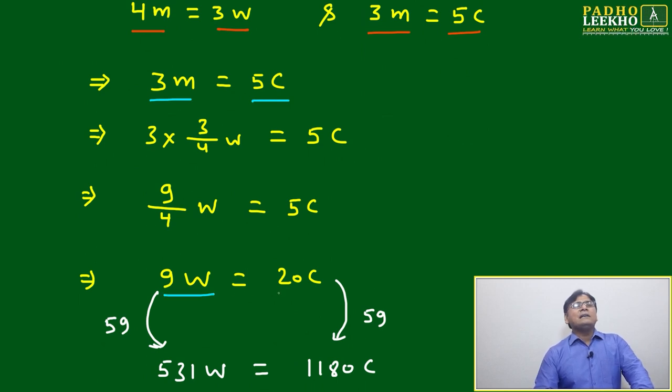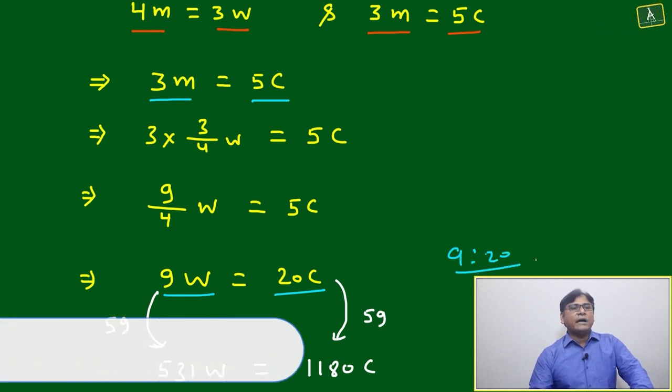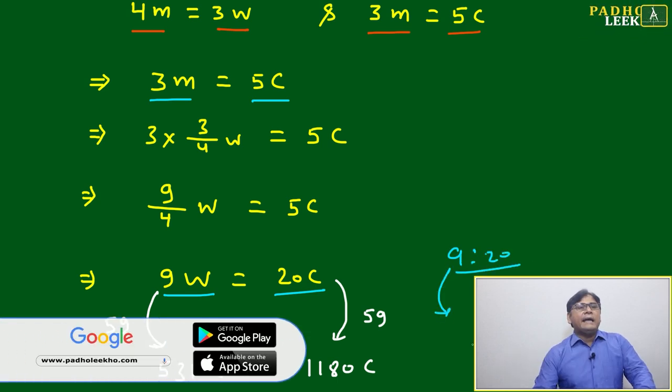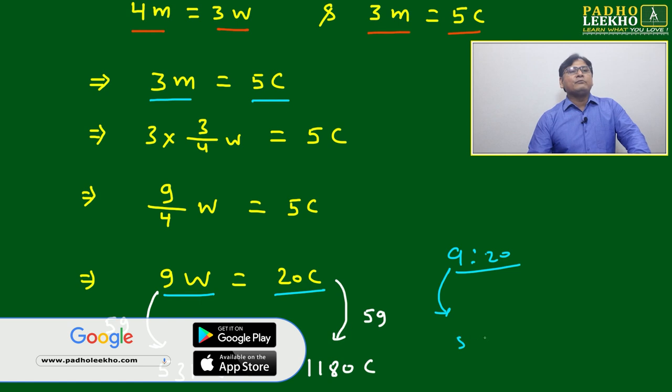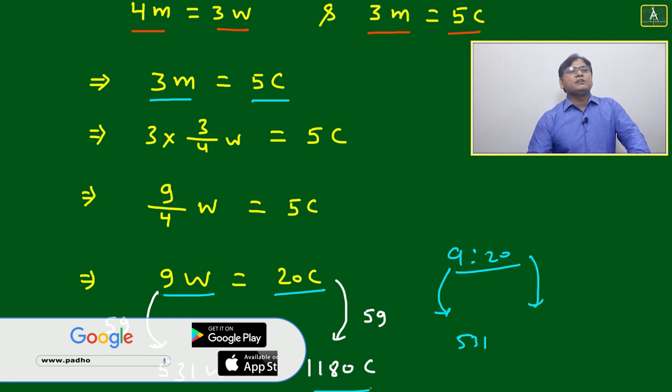You will get nine women equal to 20 children. Then women to children, you can get the ratio nine ratio 20. The exact number of women is 531, then the exact number of children will be how much? 1180.